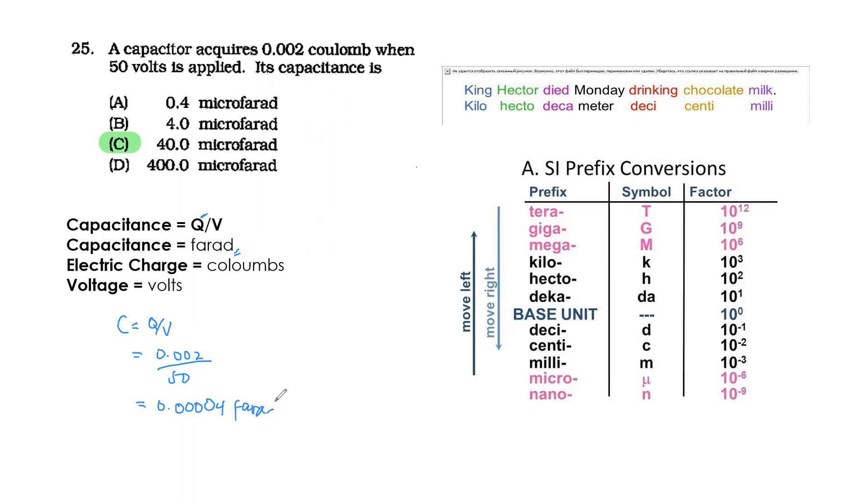If you have a calculator, you'll get a result in farads. You might get confused and pick the wrong answer because it has a decimal point. But it's microfarads, not just farads. So you need to convert it to microfarads, which is 10 to the negative 6. Move the decimal point back 1, 2, 3, 4, 5, 6 places.